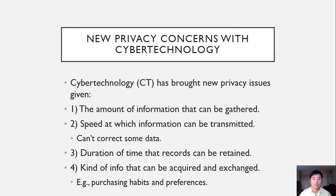Also, the speed at which information can be transmitted opens up new kinds of privacy issues. Sometimes personal information about yourself might get out on the web, and it can be transmitted so quickly that if it's false, you might not have enough time to change it or ask whoever's housing that information to alter it. A bunch of false information could be out about you across a variety of different sites, which could be a detriment to you.